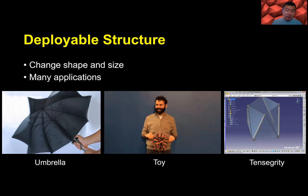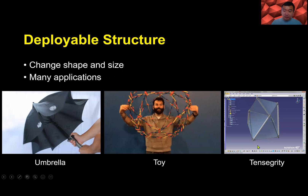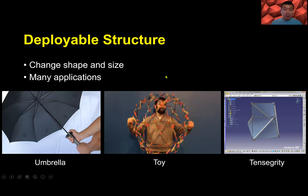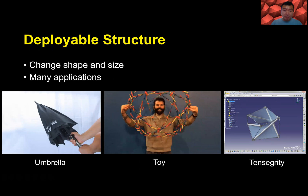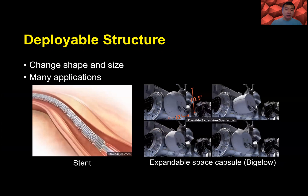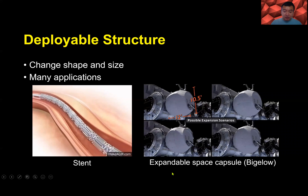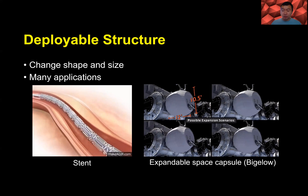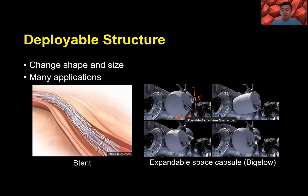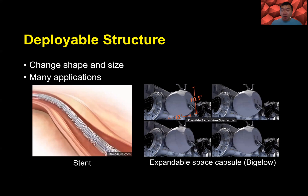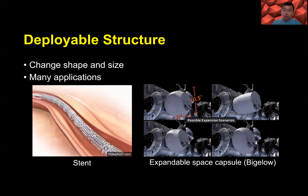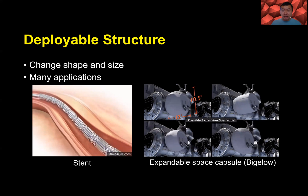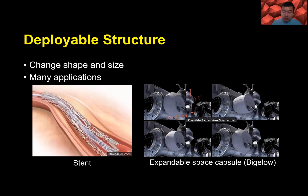For example, an umbrella, a toy, and a tensegrity structure. Deployable structures find many applications, particularly in biomedical and space fields. This is the BEAM module — an expandable space capsule developed by Bigelow Aerospace, which was launched to the International Space Station in 2016 on a SpaceX payload.